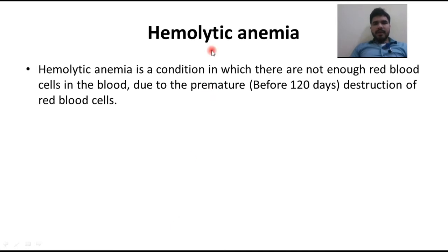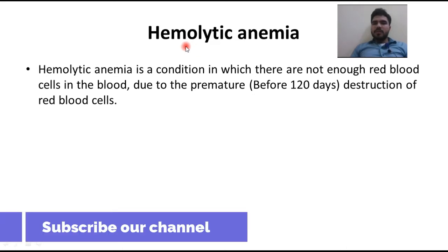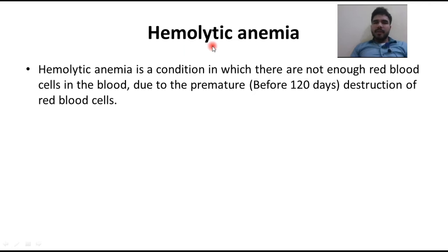Assalamu alaikum dear students. Today we are studying our next topic: hemolytic anemia. 'Hemo' means blood, 'lysis' means splitting up, and anemia is the deficiency of hemoglobin, which is the oxygen-carrying substance to body tissues. When we have blood lysis, we call that type of anemia hemolytic anemia, because hemoglobin is part of red blood cells.